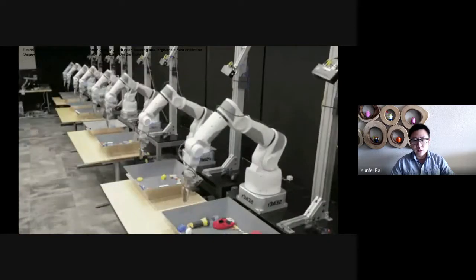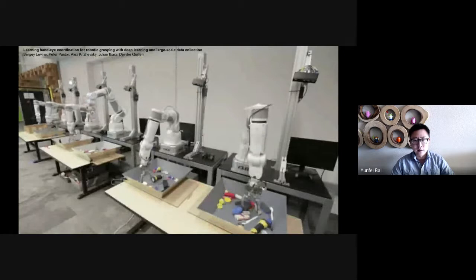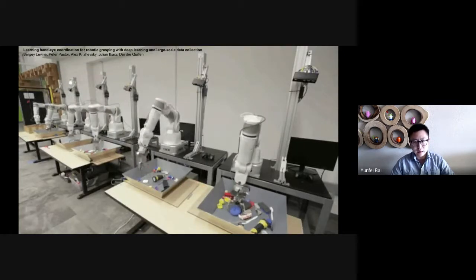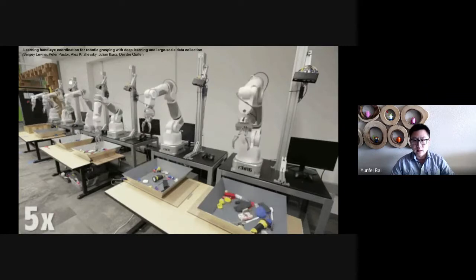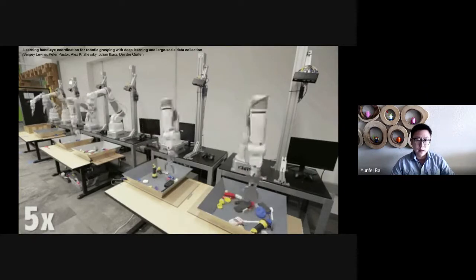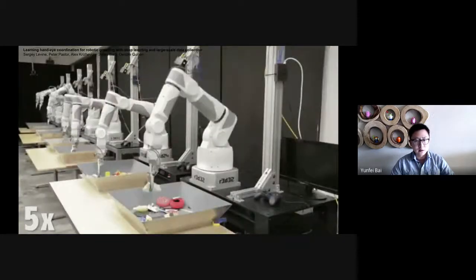We use self-supervised learning to learn a grasp success prediction model. The model takes the image and a candidate gripper command as input and predicts how likely this grasp is going to be successful. Once we have this model, we use cross-entropy method to search good actions.